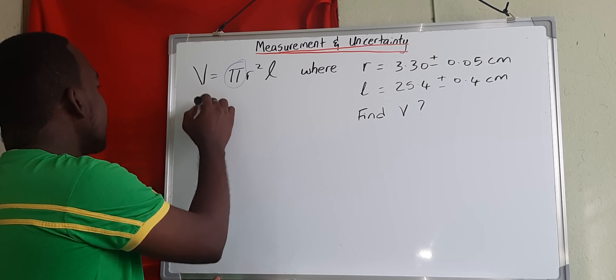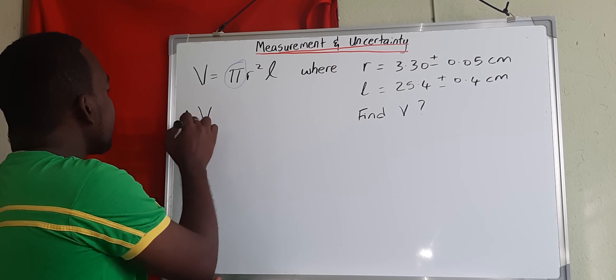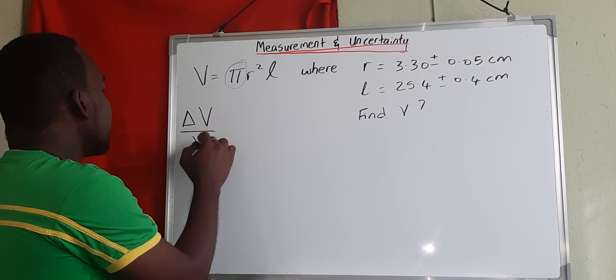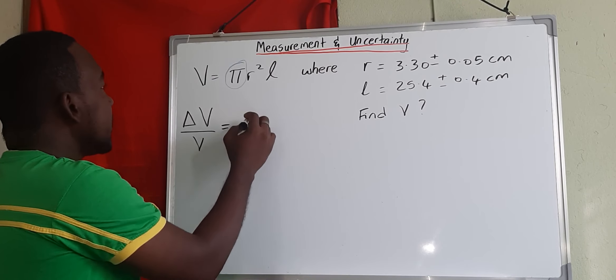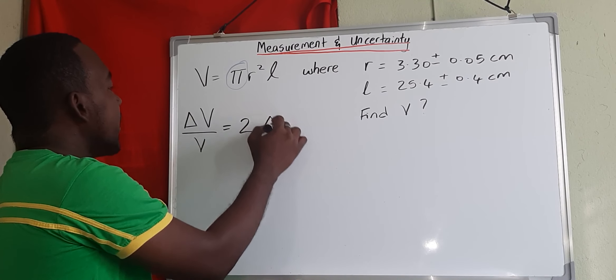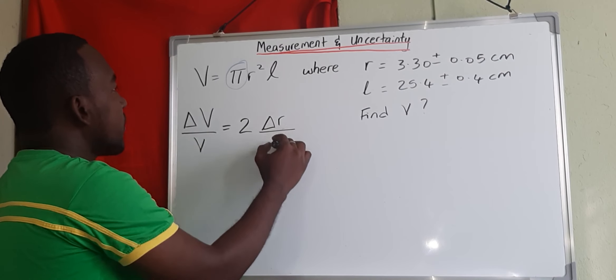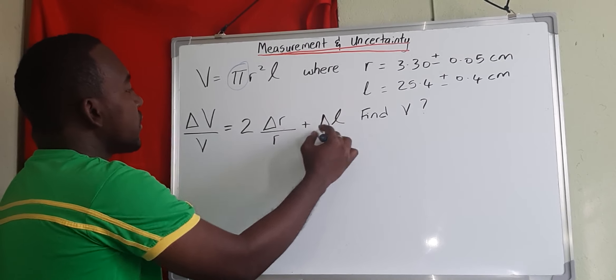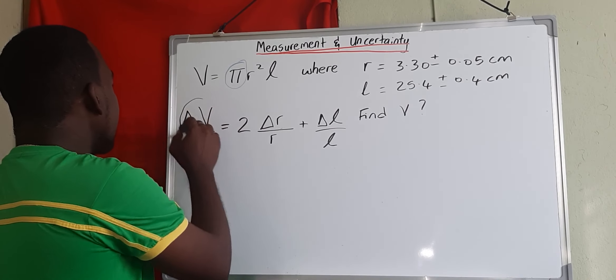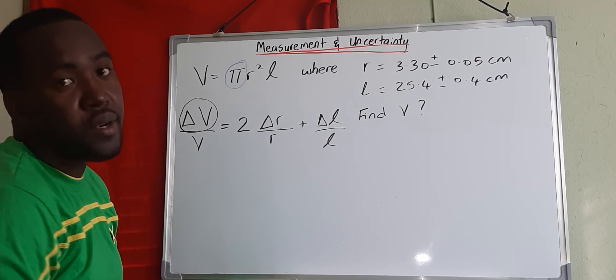To find the uncertainty in v, since we're having multiplication here, that means we have to find a fractional uncertainty, and this is r to the power 2. So that means we take down the power and we find the fractional of r plus fraction of l. Before we can find our uncertainty in the volume, we have to find the value of v.